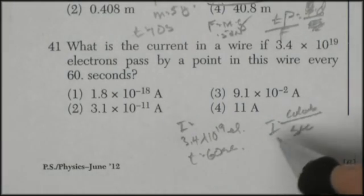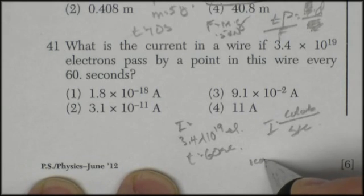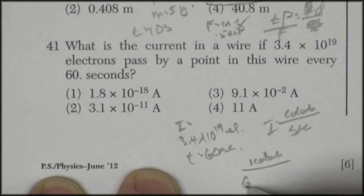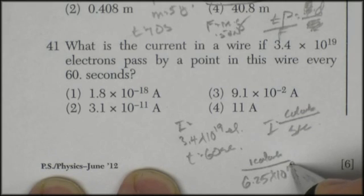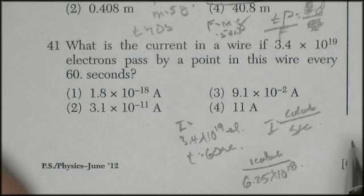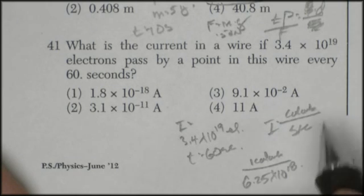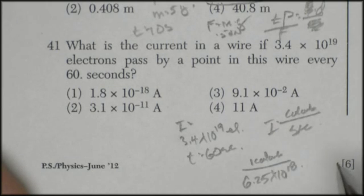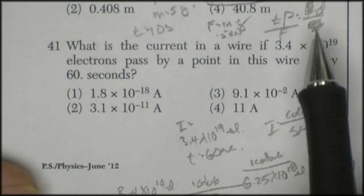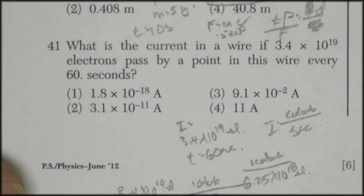So 1 coulomb is 6.25 times 10 to the 18. I think the first thing I've got to do is find out how many charges. I've got this many electrons. And how many coulombs of charge is that? So I did this. I said I've got 3.4 times 10 to the 19 electrons.